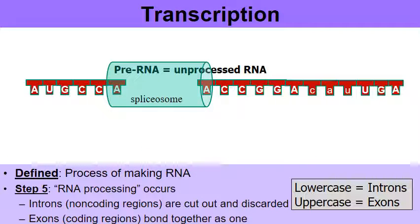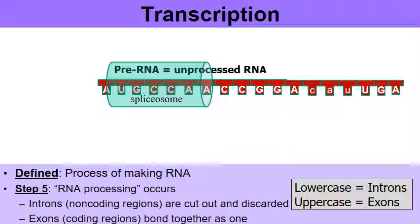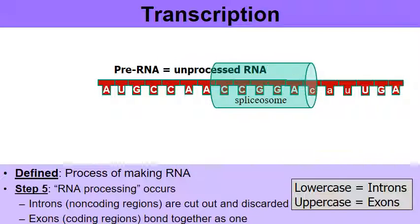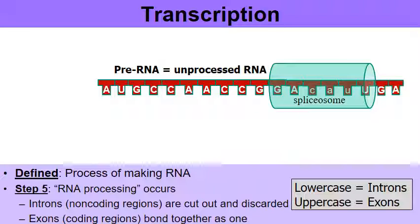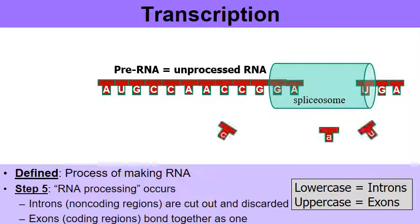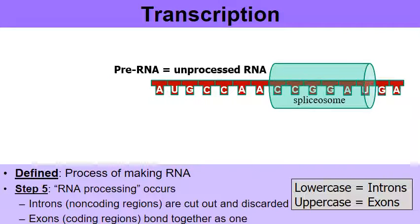The exons are then bonded together. And the spliceosome will continue until it finds another intron, another set of lowercase letters. And the spliceosome will then start to cut out these introns as well. And eventually the exons are spliced back together.